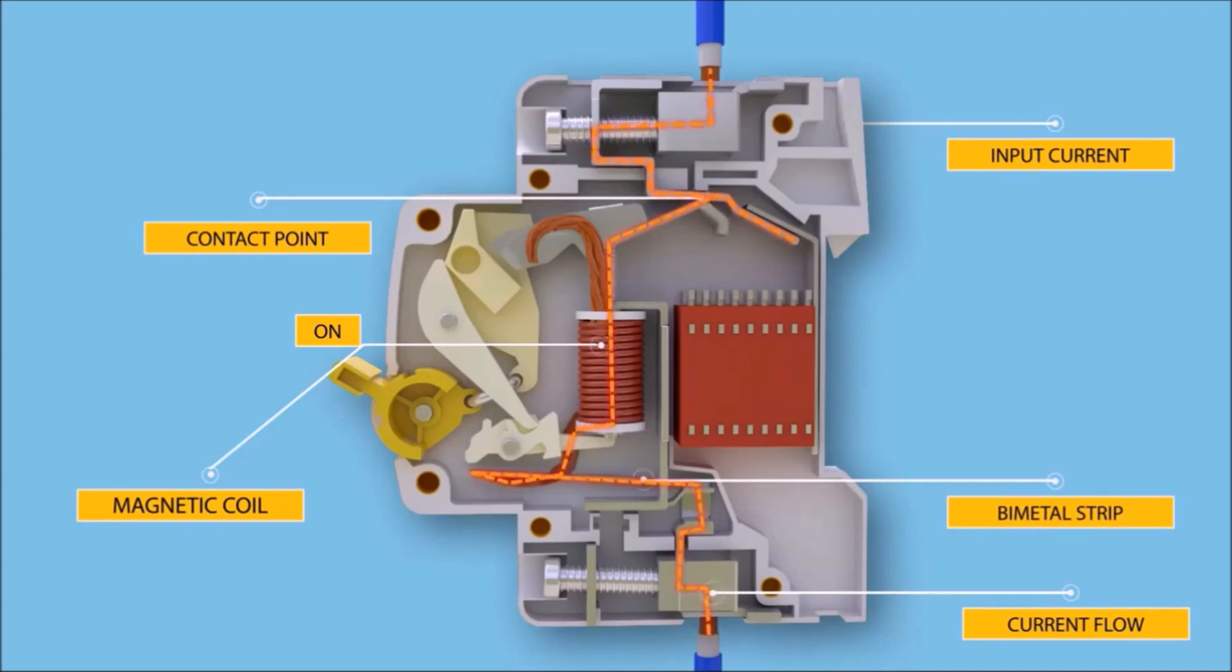Under overload conditions, the current through the bimetallic strip causes its temperature to rise. The heat generated within the bimetallic strip is enough to cause deflection due to thermal expansion of the metals. This deflection releases the trip latch and the contacts get separated.